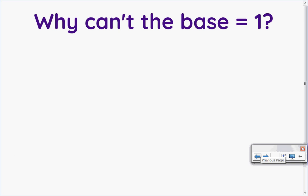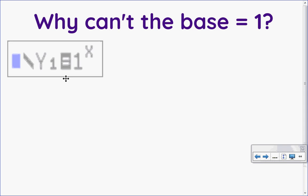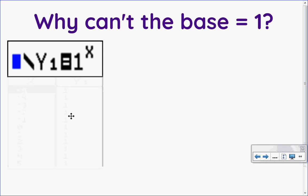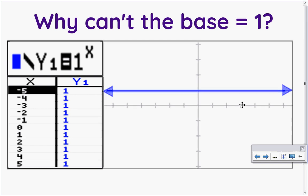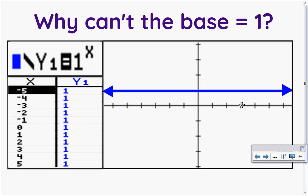Why can't the base be one? For a very similar reason — if I were to have one to the exponent of x and put in any value of x, I would just get one, because one to any power will always just be one. If I looked at that graph I would not get an exponential graph; again I would get a linear graph because this is a horizontal line.